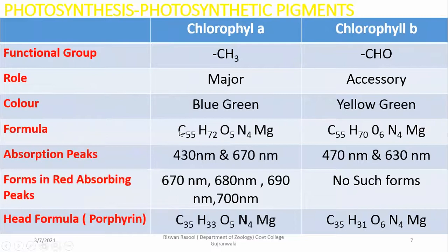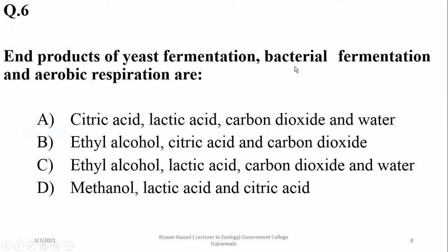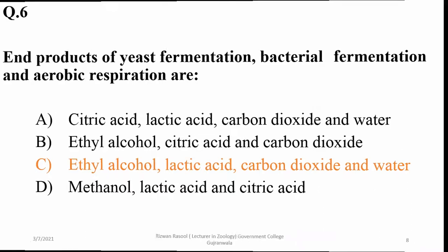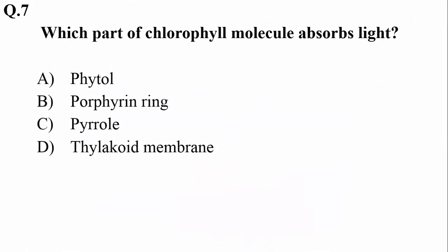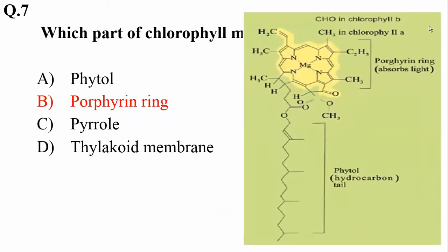These are some of the differences between chlorophyll a and chlorophyll b. The end products of yeast fermentation, bacterial fermentation, and aerobic respiration are: ethyl alcohol, lactic acid, carbon dioxide gas, and water in aerobic respiration. Yeast as well as bacteria produce alcohol as well as lactic acid during fermentation. Which part of the chlorophyll molecule absorbs light? It is definitely the porphyrin ring head of the chlorophyll that absorbs light.